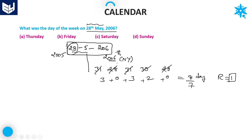Coming to the left-hand side: in 2005 completed years, you write the maximum 400 multiple, which is 2000. Additionally, 5 years are left over. For these 2000 years, the number of odd days is 0.